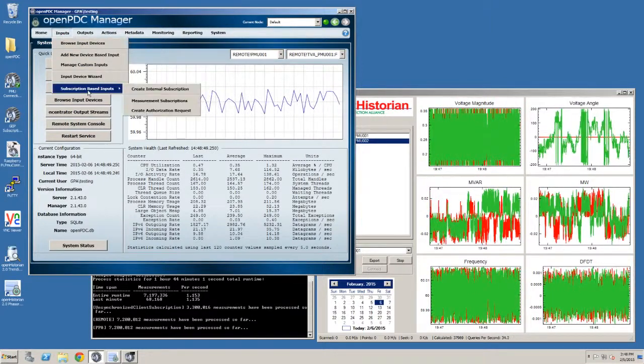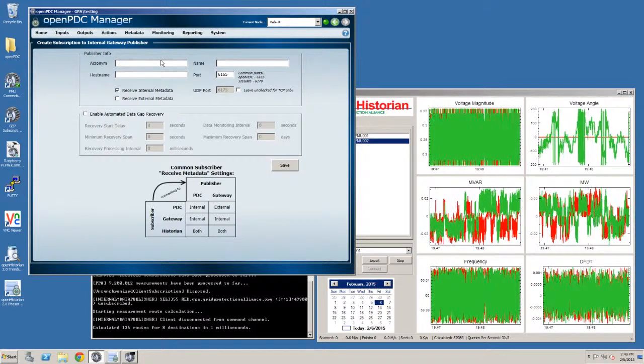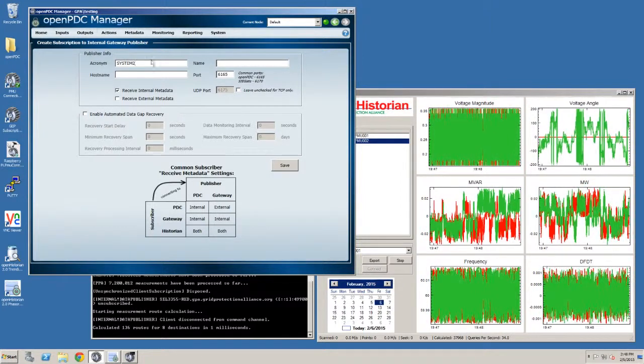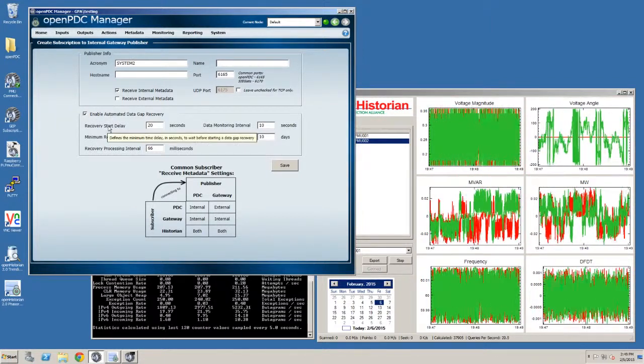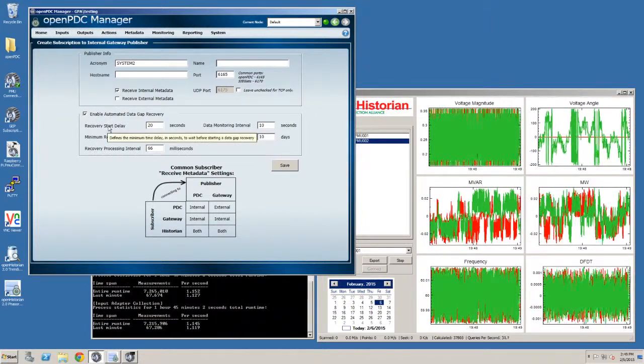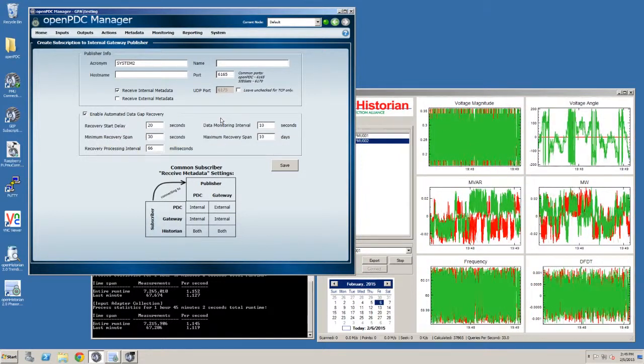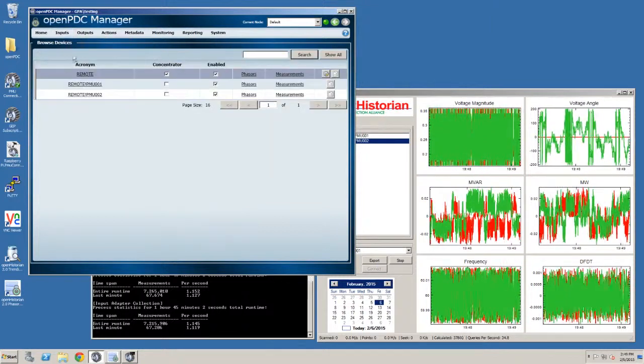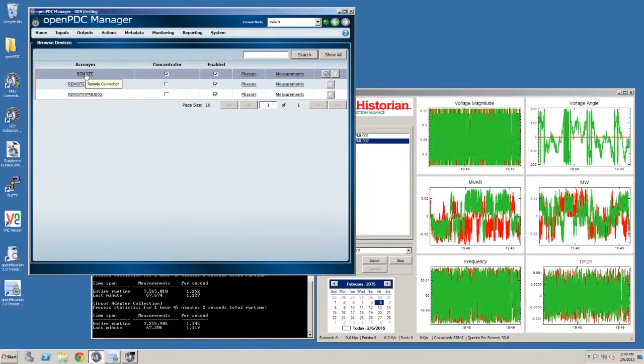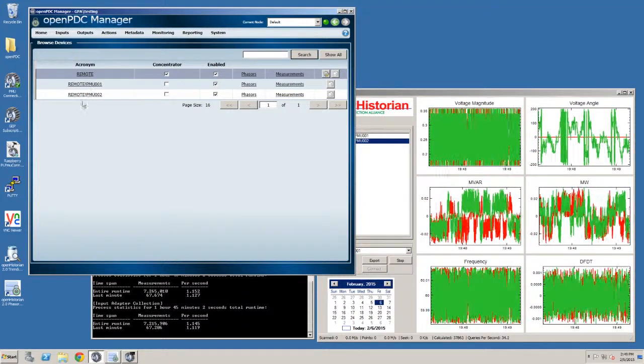You'd fill in the properties. And then you would check the box for automated data gap recovery. And you have some options you can fill out. But they're set to some reasonable values. And generally, if you just wanted to automatically get data, you just hit save. So this one's already been set up. So we have a connection to the remote system. And that is a gateway exchange protocol kind of session. And it's connected to two PMUs.